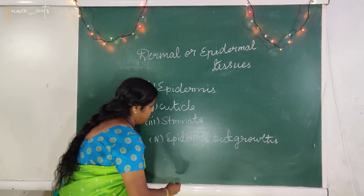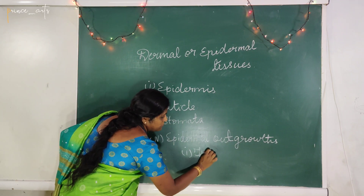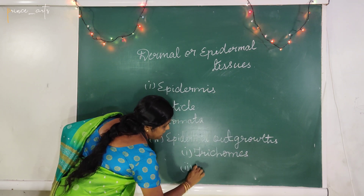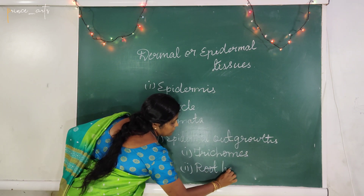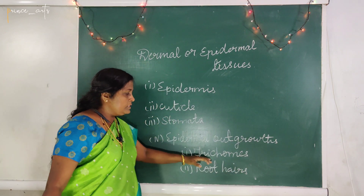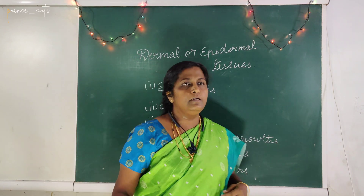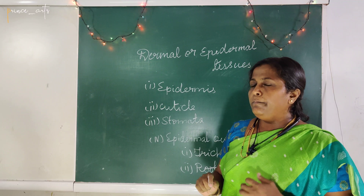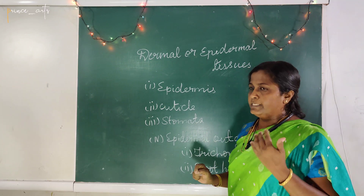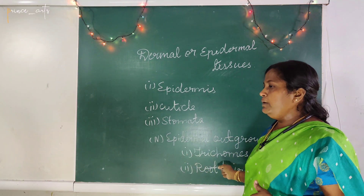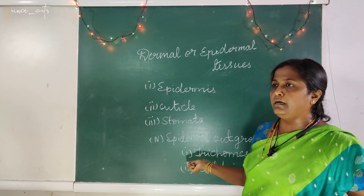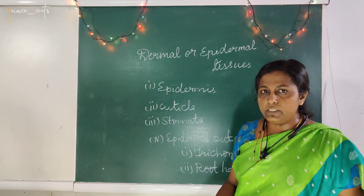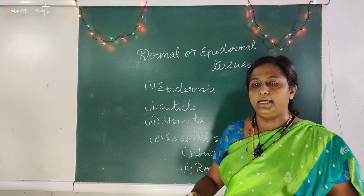The fourth component is epidermal outgrowth. One type is trichomes and another is root hairs. Trichomes are used for secretion and protection — they do various functions.